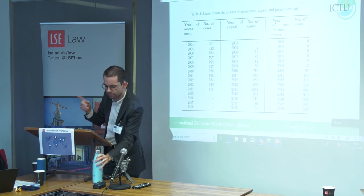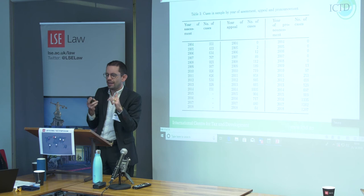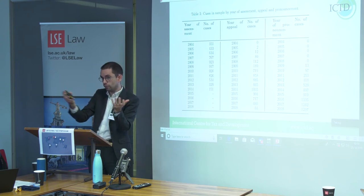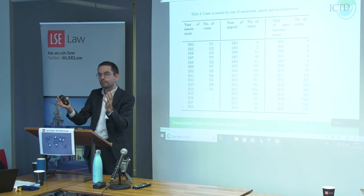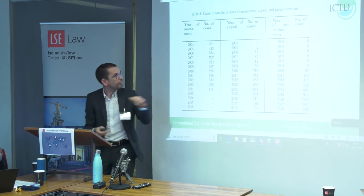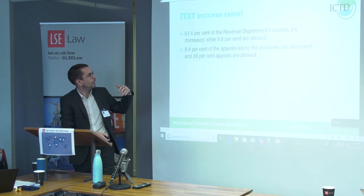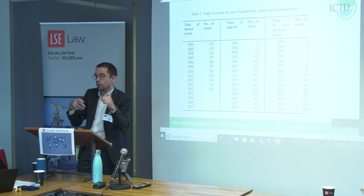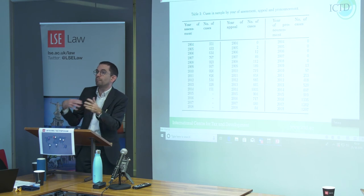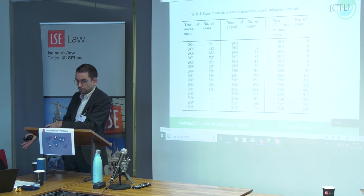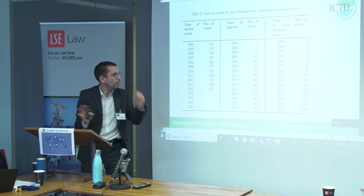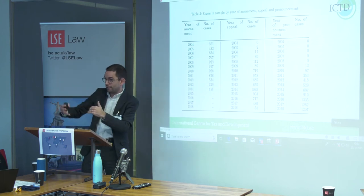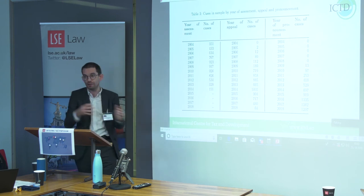Two data caveats: first, the analysis covers only cases that reached the ITAT, so we don't know about cases that went through the DRP or CITA and were not further appealed — statistics on success rates and timing only cover appealed cases, which is a limitation that should be clarified. Second, there is a lag issue: as you get closer to the data collection date of October 2018, fewer cases have yet reached decision points at the Tribunal. The apparent declining variation in duration in recent years may therefore be an artifact of the data rather than a substantive finding.